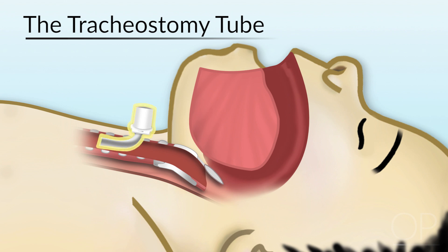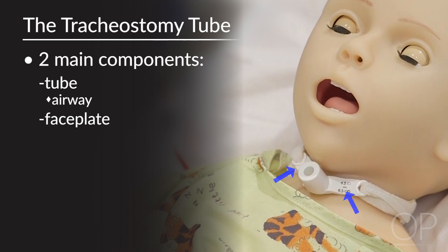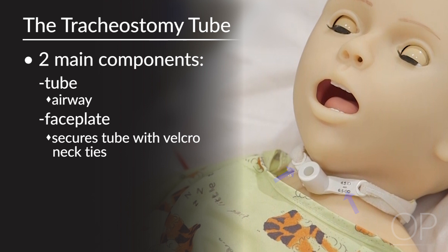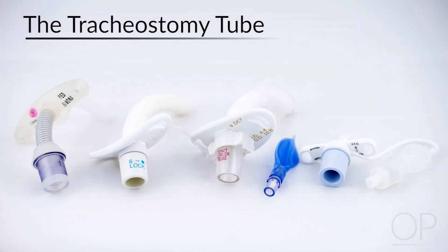A tracheostomy tube is a curved ventilation tube that sits within the trachea below the level of the larynx. The tracheostomy tube usually has two main components: the tube itself that serves as the airway, and the faceplate. The faceplate has two flanges that allow the tracheostomy tube to be secured in place by neckties. The faceplate also usually has information printed on the surface that describes the type and size of tracheostomy tube. Multiple models and different brands are available, but generally speaking, tracheostomy tubes can be divided into two broad categories.